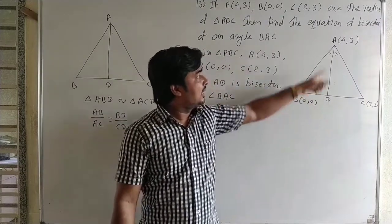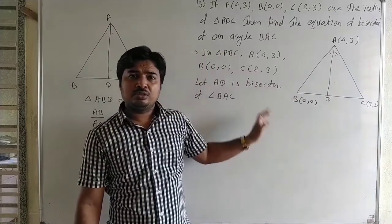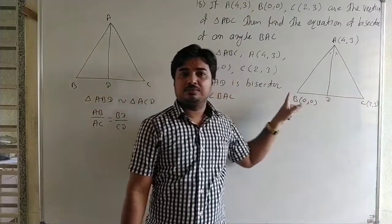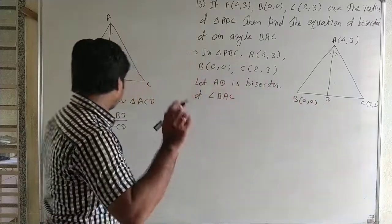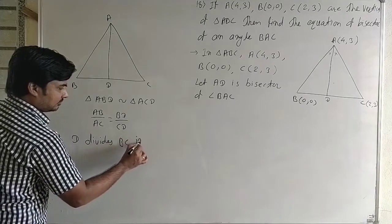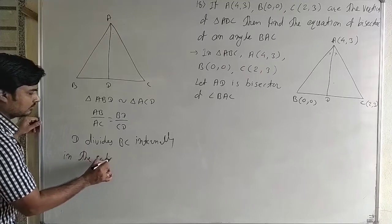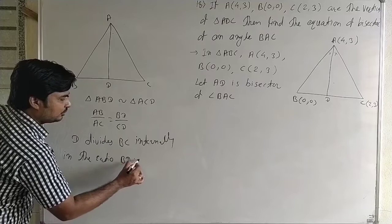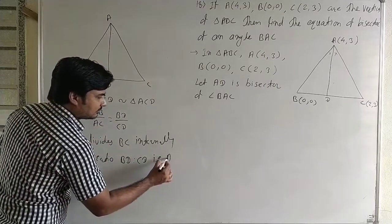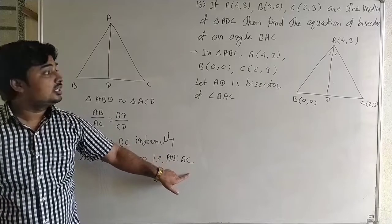By the angle bisector theorem, triangles ABD and ACD are similar. Therefore the sides are proportional: AB/AC = BD/CD. Since AD is common, the triangles are similar and we can write this ratio. We want to find the coordinates of point D. Point A is given; once we know D, by the two-point equation of a line we find the equation of the angle bisector. D is a point on line BC, so D divides BC internally in the ratio AB to AC.